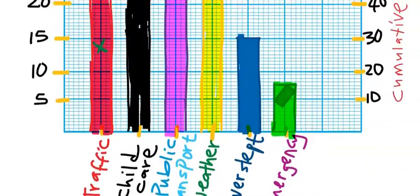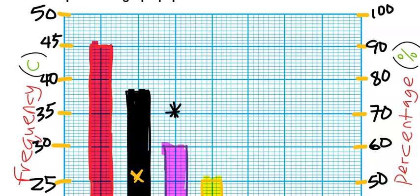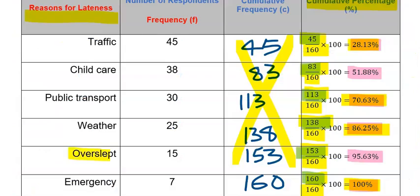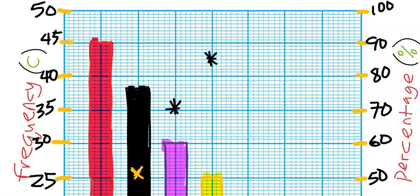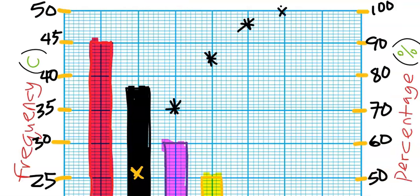Next, is weather, which is 86.25. And 86.25 is somewhere here, and we trace it until we get here, and we mark it. The points have to be right at the top of weather. And for overslept, we got 95.63. And 95.63 is somewhere here, and we trace it until we get to this point, and we mark it. This should be more accurate with a graph, ruler, and pencil. And for emergency, it is 100%. Hence, 100% will be here, which is right above emergency.